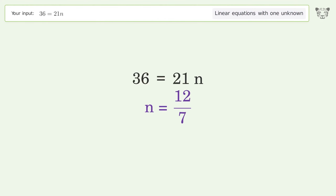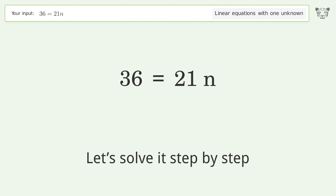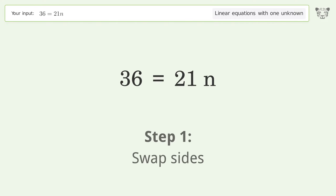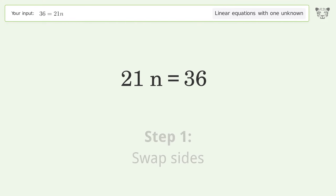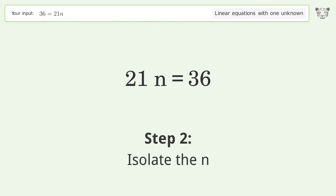Tiger is asked to solve a linear equation with one unknown. The final result is n equals 12 over 7. Let's solve it step by step — swap sides.